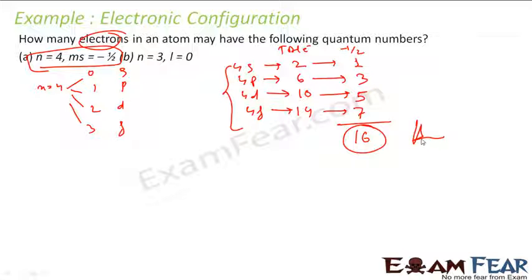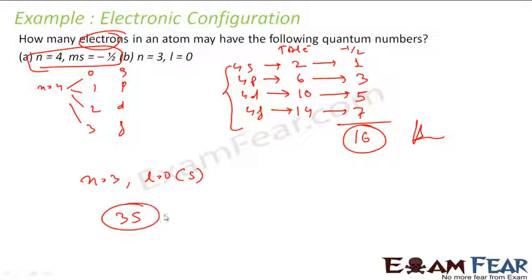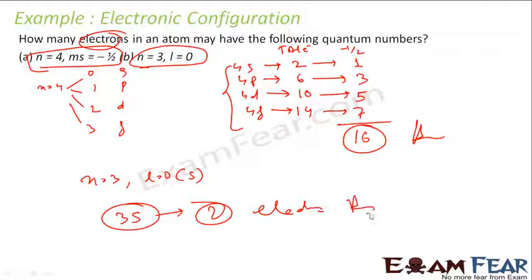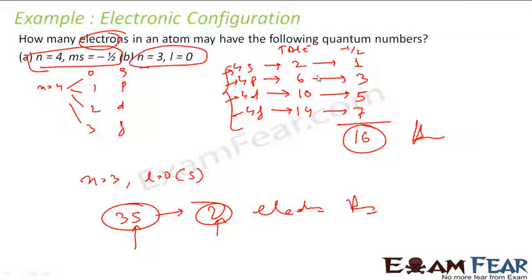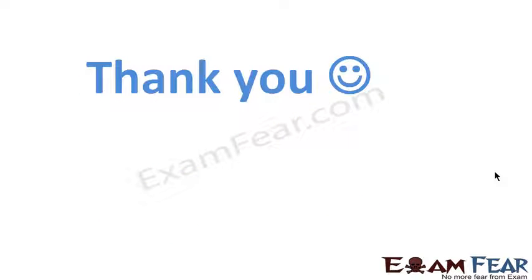The second part: n=3 and l=0, which is the 3s subshell. How many electrons are in the 3s subshell? Just 2, because the s subshell can only hold 2 electrons. So for n=3 and l=0, the answer is 2 electrons. When we say n=4 and ms=−1/2, we're talking about all 4s, 4p, 4d, and 4f subshells combined.